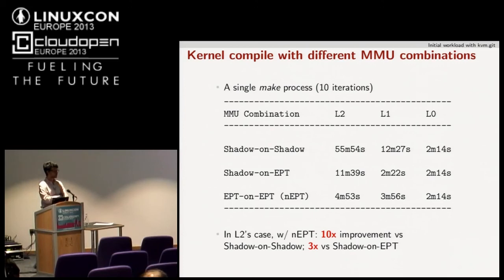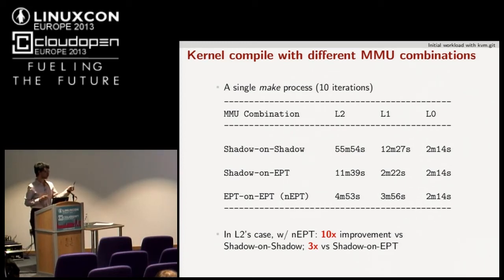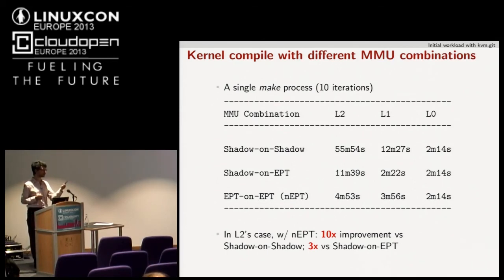Is VMCS one level deep — only a single instance? VMCS is a data structure that also exposes software VMCS. For each virtual machine you can use a different VMCS. I was running multiple L2 guests — four L2 guests — consistently without any crash, so it's not limited to one.